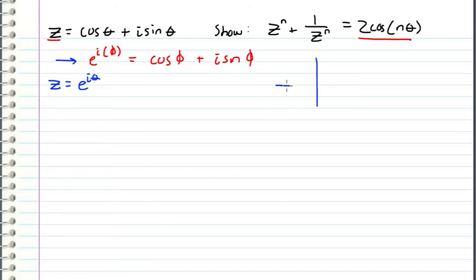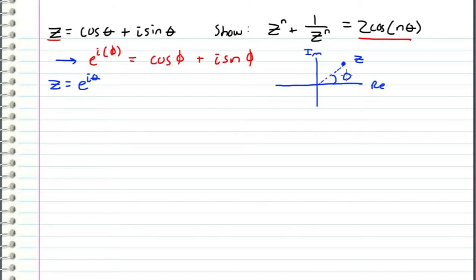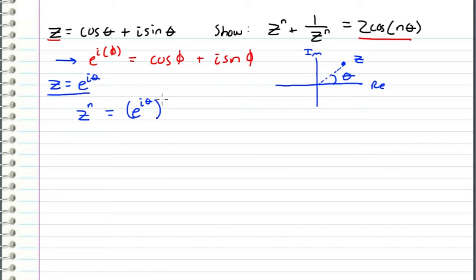We can think about it like this: here's our complex plane with our real and imaginary axis. This point right here is our z, where the angle of the vector pointing from the origin to z is theta. So expressing z in its polar form gives us z is equal to e to the i theta. Now I want to raise z to the nth power by raising its polar form to the nth power. So we can say this is equal to e to the i theta raised to the nth power, which comes out to be e to the i times n theta.